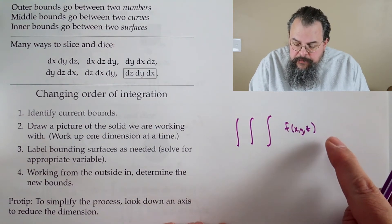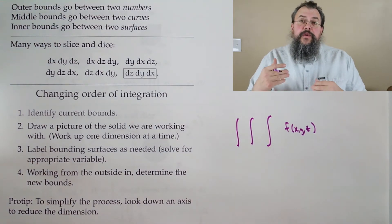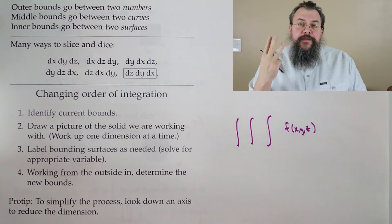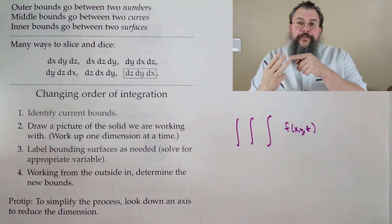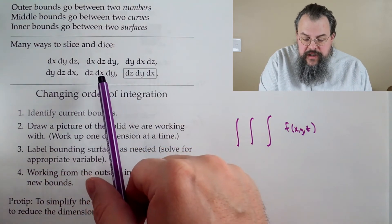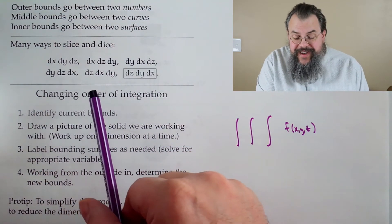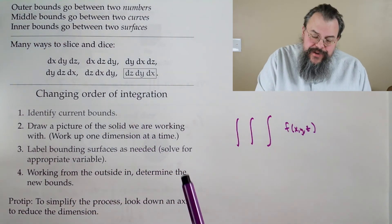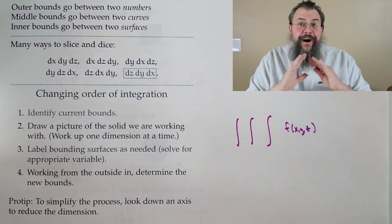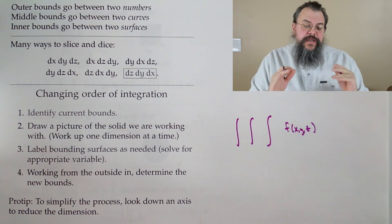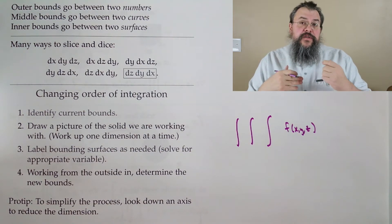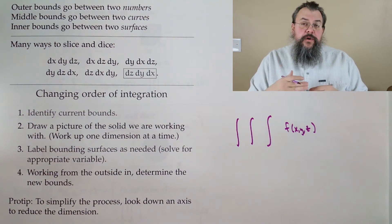When we did two-dimensional integrals, we had dx dy or dy dx — two possibilities. With three variables, there are six different orderings: dx dy dz, dx dz dy, dy dx dz, dy dz dx, dz dx dy, and dz dy dx. If the region is a box, all of them are perfectly fine. From a theoretical perspective, none is better than another. From a problem perspective, certain orderings work better depending on the shape and how you describe it.